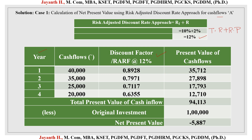There are 4 years in total. Cash flows for project A are 40, 35, 25, and 20 (in thousands). The discount factor at 12% is calculated using the formula: 1 divided by (1 + R) to the power of N, which is 1 divided by (1.12) to the power of N. For year 1, this gives 0.8928. For year 2, divide 0.8928 by 1.12 to get 0.7971, and follow the same for years 3 and 4.